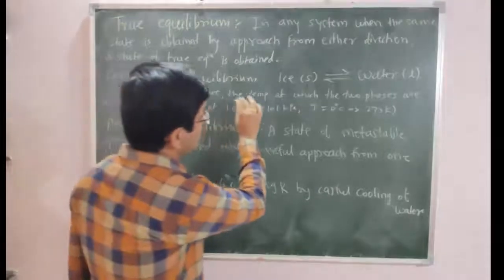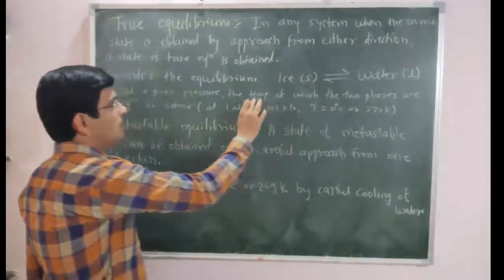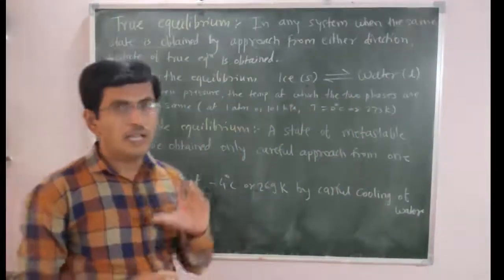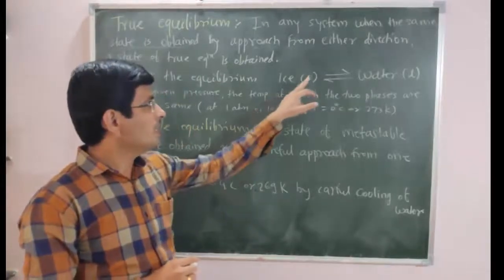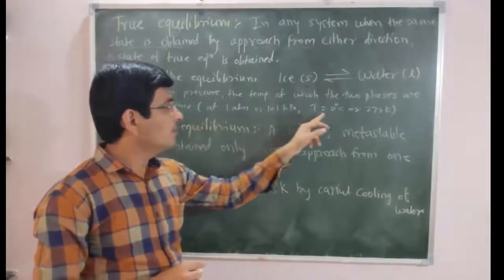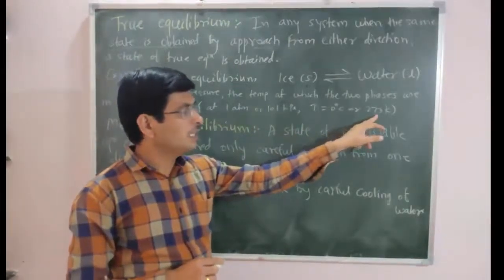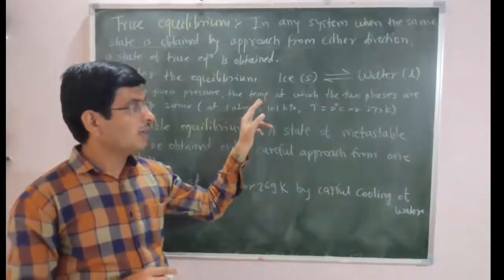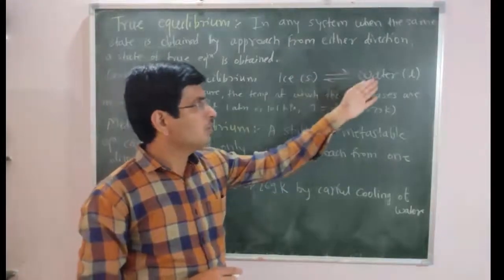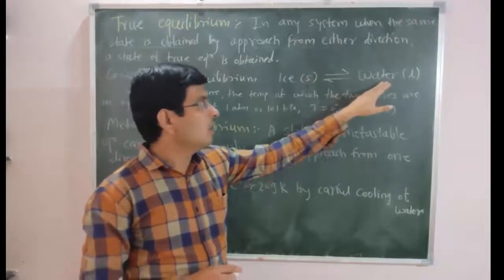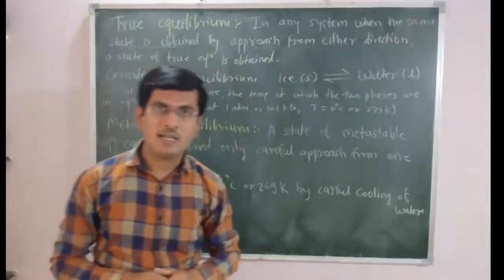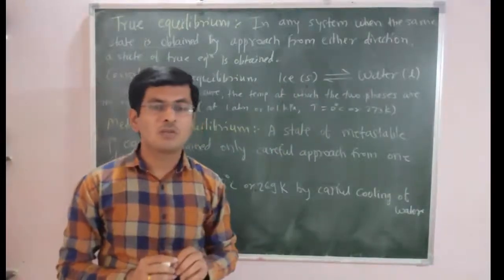At a given pressure, the temperature at which the two phases are in equilibrium is the same irrespective of the direction. For example, at one atmospheric pressure the temperature is 0 degrees Celsius or 273 Kelvin. You can melt the ice to obtain water, or in the reverse direction by freezing the water you get ice — and in both cases the equilibrium between ice and water is the same. Such equilibrium is called true equilibrium.